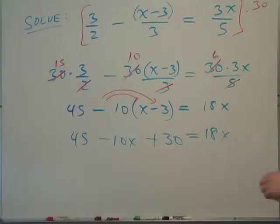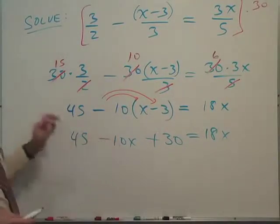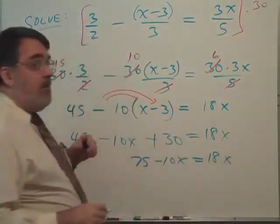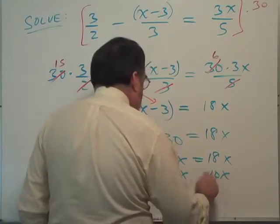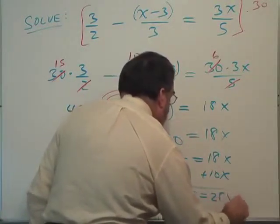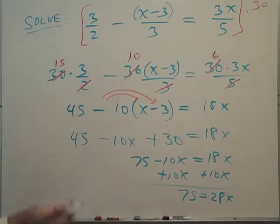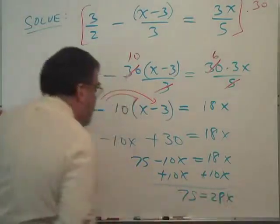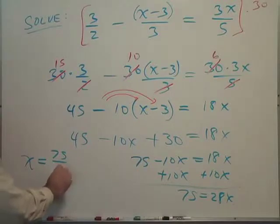Well, let's finish up the problem. We can do a little simplifying here. 45 plus 30 is 75 minus 10x equals 18x. We're going to add 10x to both sides. And we end up with 75 equals 28x. Our next step is to divide by 28. That will give us x equals 75 over 28 as an answer.